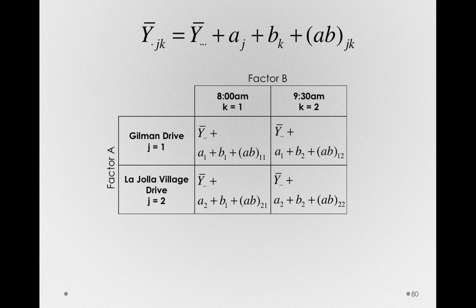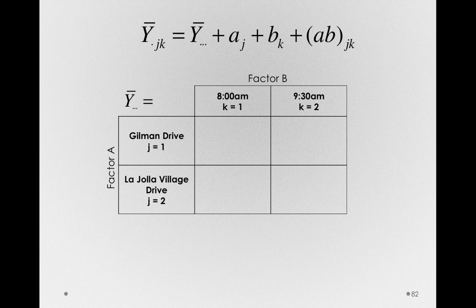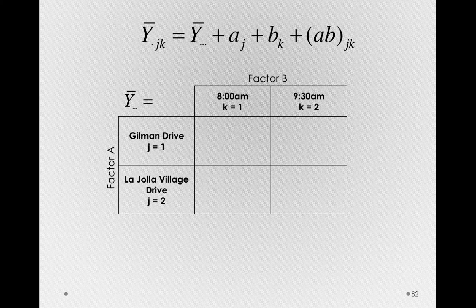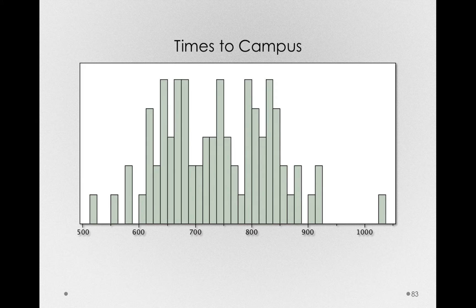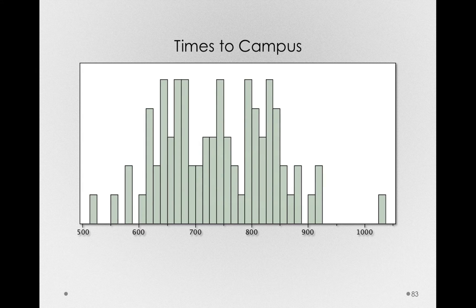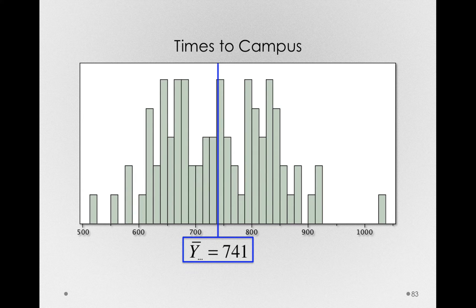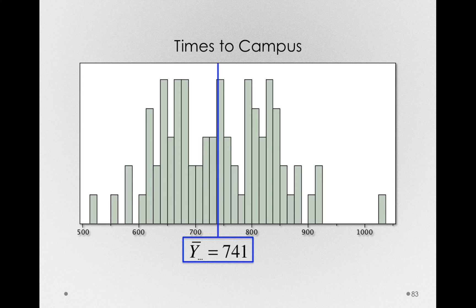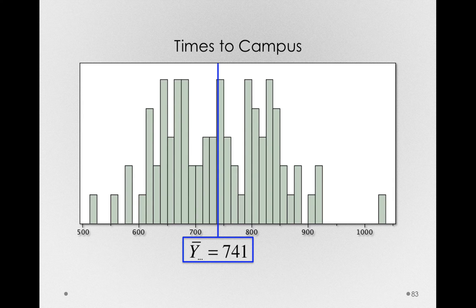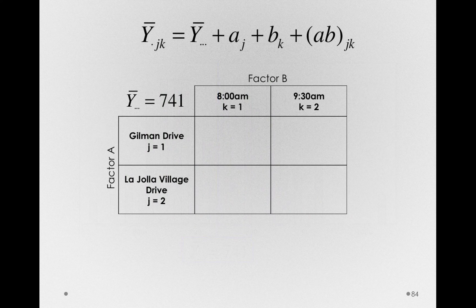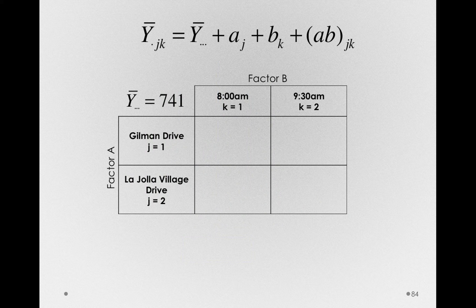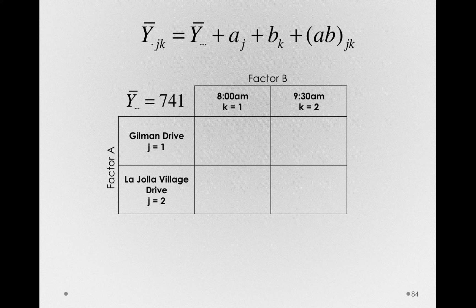Let's start with the first, the grand mean, Y bar dot dot dot. Well, that's as simple to find as simply taking all the scores and adding them up and dividing by the number of scores we have. This is simply the grand mean ignoring the model completely. In these data, the grand mean for the 80 observations was 741 seconds. So I'll put that value at the top corner; that's going to apply to all of the different cells.